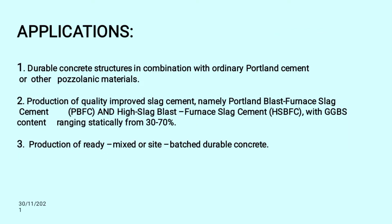From here we will know about the applications of GGBS. First, durable concrete or structures in combination with ordinary Portland or other pozzolanic material. Second, production of quality improvement slag, namely Portland Blast Furnace Slag Cement and High Slag Blast Furnace Slag Cement, with GGBS content ranging from 30% to 70%. Third, it is used for the production of ready-mix and site-based durable concrete.